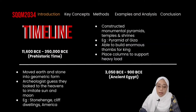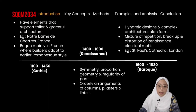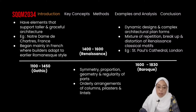Next, we have ancient Egypt, where people in the era constructed monumental pyramids, temples, and shrines. As an example, we have the Pyramid of Giza. Next, the Gothic era, where they have elements that support taller and more graceful architecture. As an example, Notre Dame des Chartres in France.